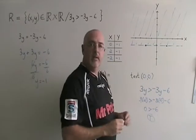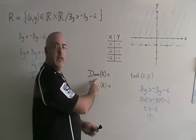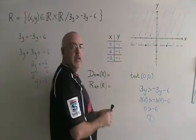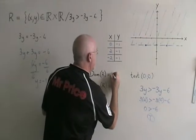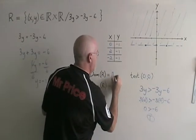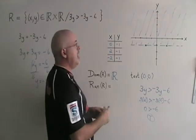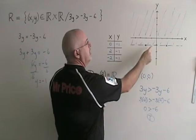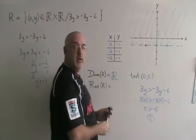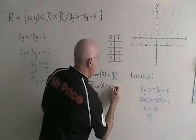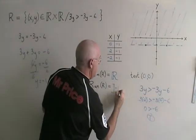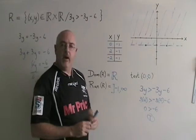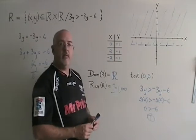All that's left to do now is get the domain and range. The domain is all the x values used in my answer, and we can see that every x value will be used, so the domain is all real numbers. The range is all the y values used in the answer, and the y values go from negative 1 upwards towards positive infinity, with negative 1 not included. I have graphed my inequality and given the domain and range.